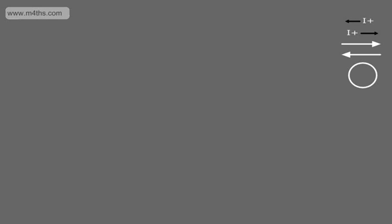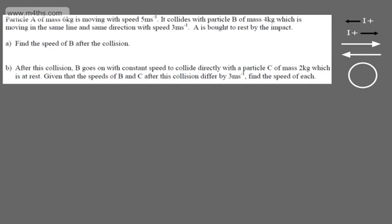This is the third video on impulse and momentum, and we're going to work through some basic exam-style questions. In the first question, we're told particle A of mass 6 kilograms is moving with speed 5 meters per second. It collides with particle B of mass 4 kilograms, which is moving in the same line and same direction with speed 3 meters per second.